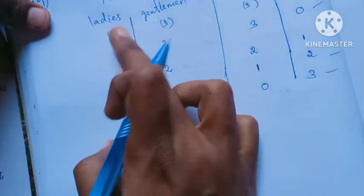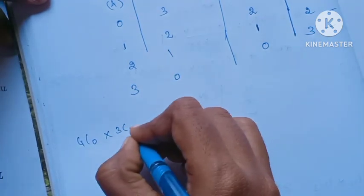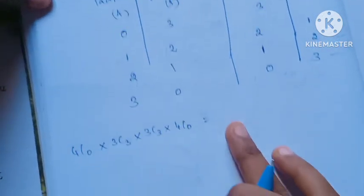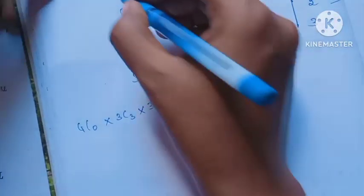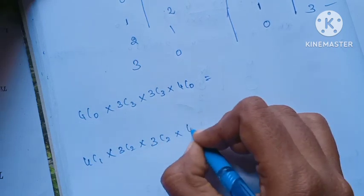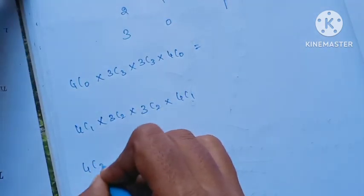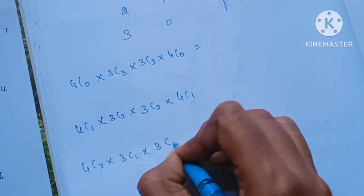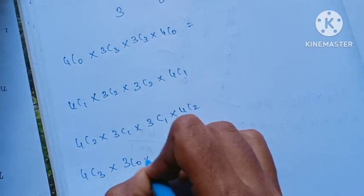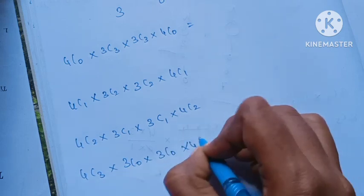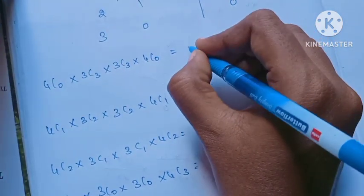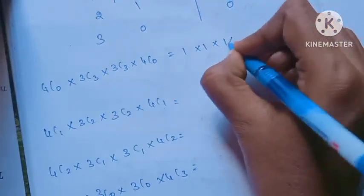Computing the combinations: Case 1 uses 4C0, 3C3, 3C0, 4C0. Case 2 uses 4C1, 3C2, 3C1, 4C1 — simplified: 4C1 equals 4, 3C2 equals 3, giving products. Case 3 uses 4C2, 3C1, 3C2, 4C1. Case 4 uses 4C3, 3C0, 3C3, 4C0.